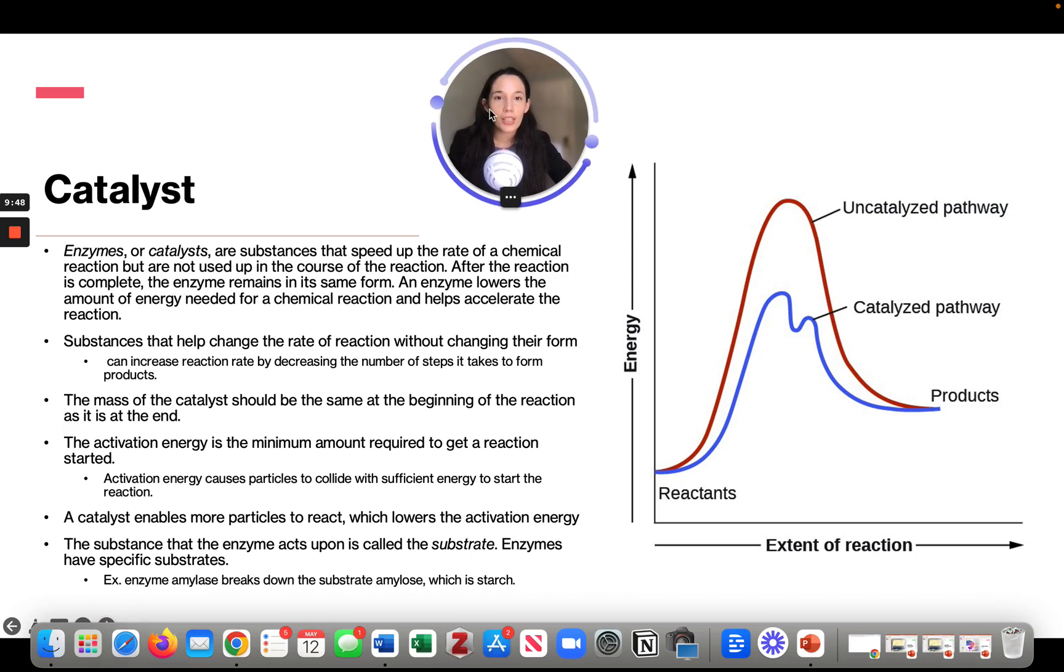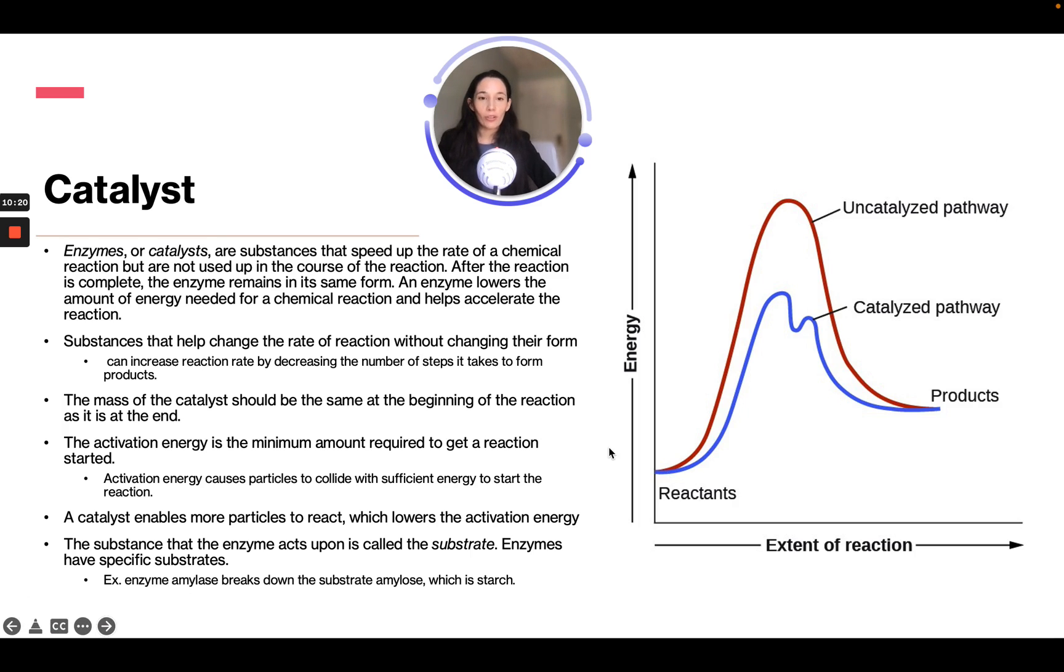In this graph, we have a reactant and we have a product. So the energy required to break down this reactant or transfer this reactant into these products is on this pathway, the pathway without the enzyme, without the catalyst. And you can see it needs much more energy than the one with the catalyst. So it is just helping to speed up the rate of chemical reactions.